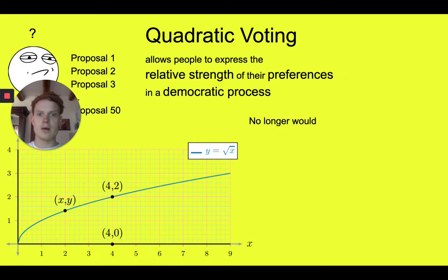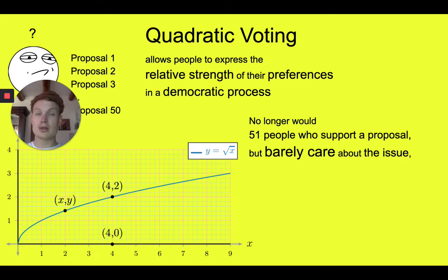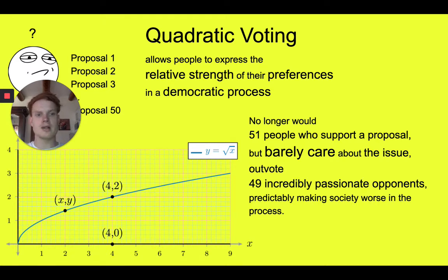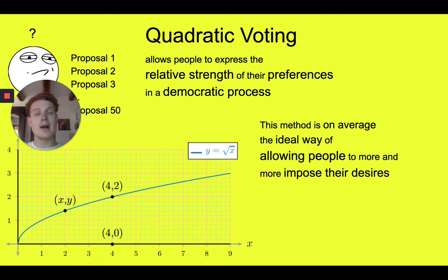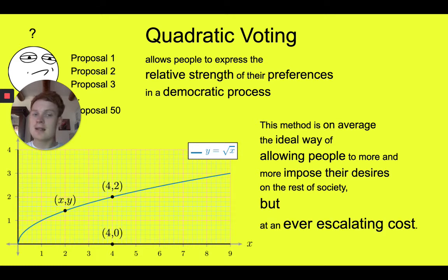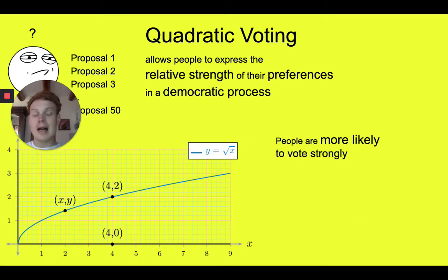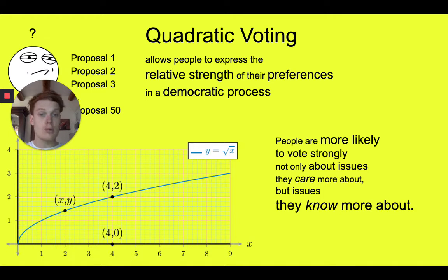Now, why does quadratic voting work like that? Basically, no longer would 51 people who support a proposal but barely care about the issue outvote 49 incredibly passionate opponents, predictably making society worse in the process. So essentially, quadratic voting on average is the ideal way of allowing people to impose their desires on the rest of society, but at an ever-escalating cost. And people are more likely to vote strongly not only about issues they care more about, but issues they know more about. In a nutshell, it allows people to express the relative strength of their preferences in a democratic process.